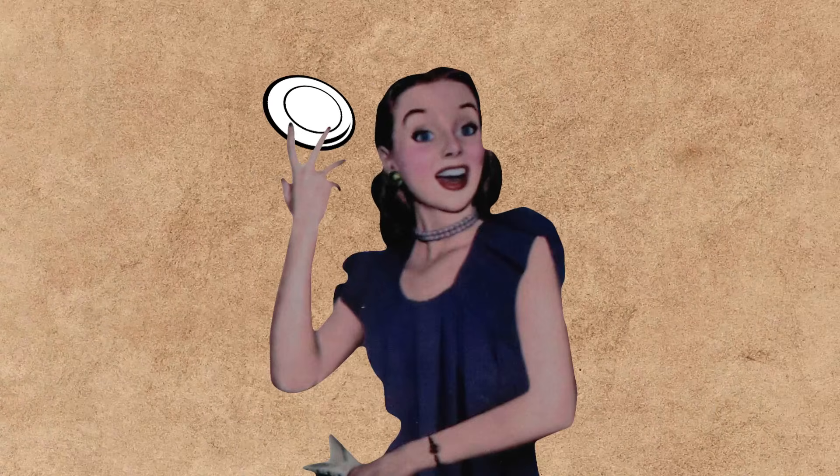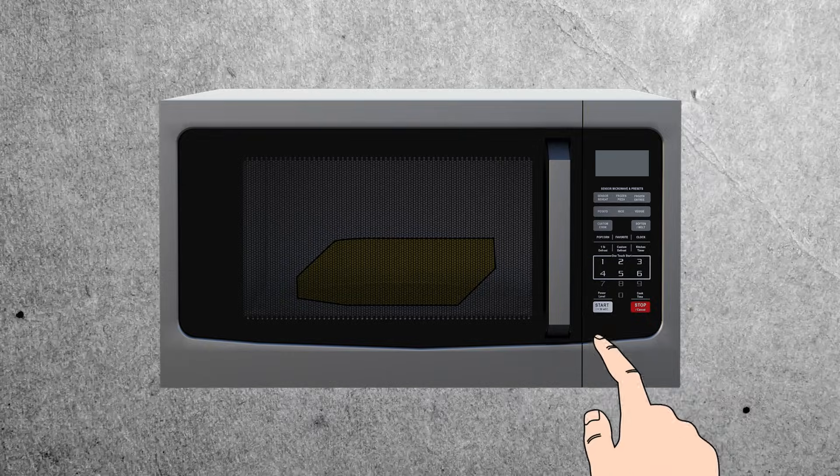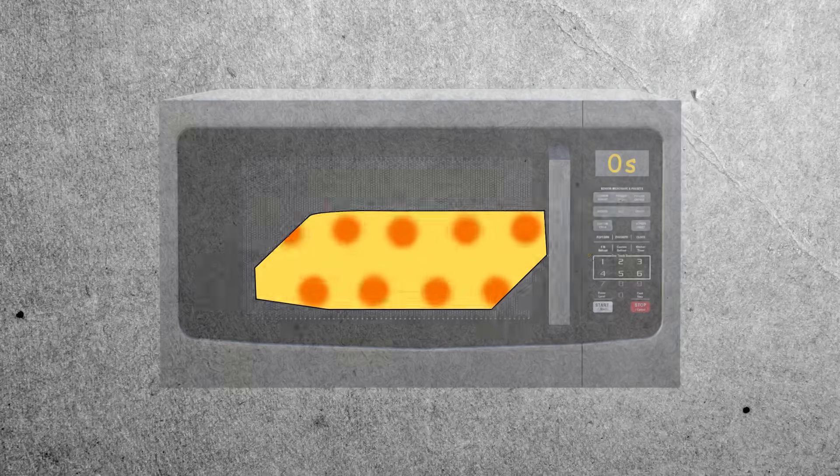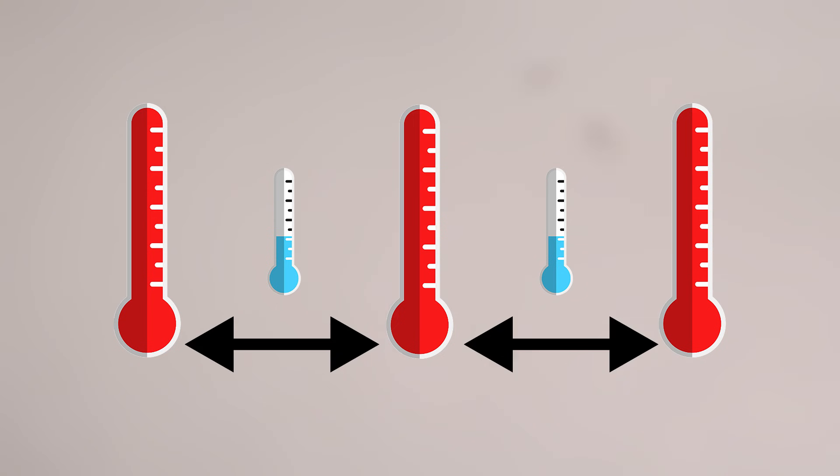Now if we remove the rotating plate system, put something that melts easily inside like butter, run the microwave for a short while and then get it out, we will notice a pattern in the butter. Melting points with some distance in between, which is a cold area.